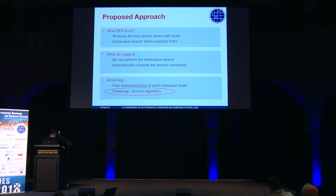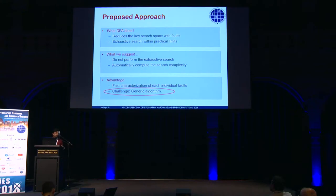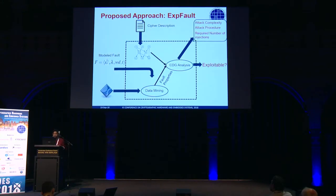When we take a deep look at DFA attacks and how they work, we find that the main idea is to introduce a fault to reduce the key search space to some extent where you can do an exhaustive search practically. So what we suggest here is: let's not perform the exhaustive search — it will take too much time. Let's automatically compute the search complexity. That's sufficient to understand exploitability. The challenge is doing it in a generic manner for every algorithm. Fortunately, we came up with one approach we call ExpFault.